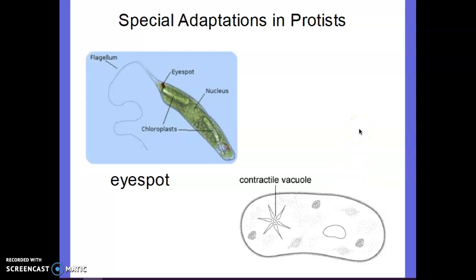That's all for today: viruses — non-living, destroy the cell they're in, only protection is vaccines; bacteria — the first two kingdoms, Archebacteria which are the ancient ones, and Eubacteria which are the more modern bacteria; and protists — have a nucleus, classified by how they move. If you guys would complete the Google form on these things, we'll be done for the day.